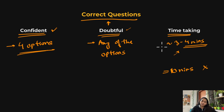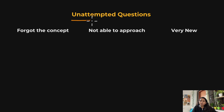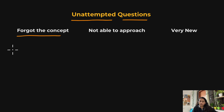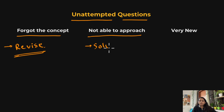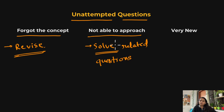After the mock test, look at unattempted questions. The reasons could be: you forgot the concept and couldn't recall it at that time — in that case, note down the topic and revise it after the analysis. Another reason could be that you understood the question and could recall the concepts, but you weren't able to approach it — in that case, solve related or similar types of questions.